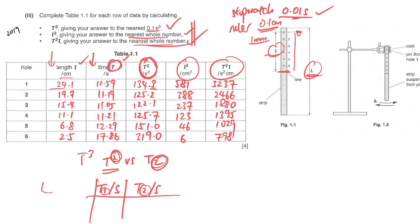Once the table is done, spend some time to check: make sure there are no units written inside the table body, and be consistent in your readings — one decimal place where required, whole number where required. Once that's done, you can proceed to plotting the graph.